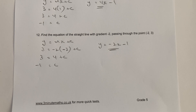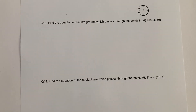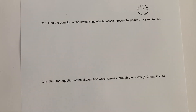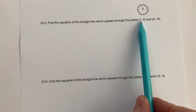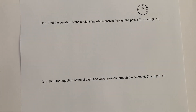This is slightly different, because in this particular case we've been given the value of two coordinates that the line passes through. So it passes through (1, 4) and passes through (4, 10). That allows us to work out the gradient of the line, and then simply, as we've done before, we take the gradient from these coordinates and work out the value of c.